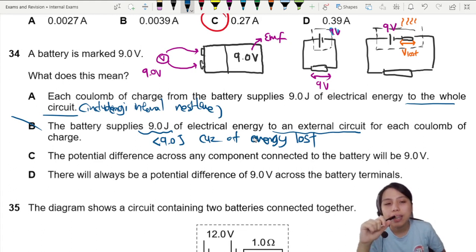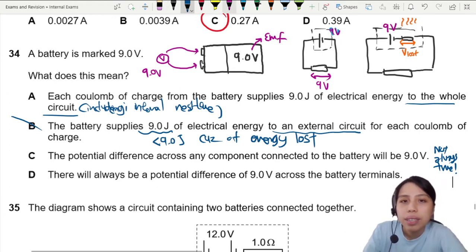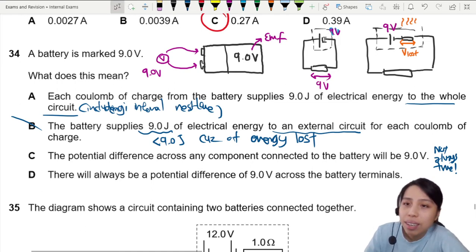C says, the potential difference across any component connected to the battery will be 9 volts. Not always true. If you look at scenario 1, EMF 9 volts, connect to this battery, 9 volts. That is because there's no internal resistance. But sometimes, you can assume batteries have internal resistance.